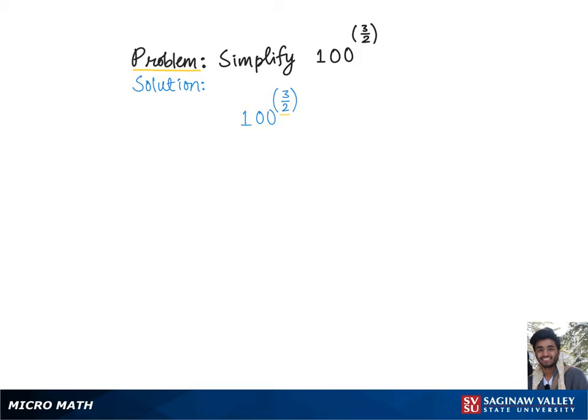So to get rid of this 2, we need to break down this base 100 such that it becomes a number raised to the power of 2.